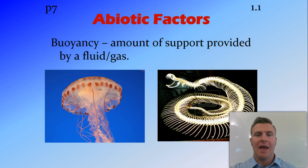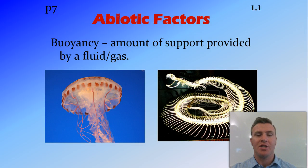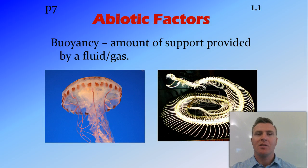Buoyancy is how much support is provided by the environment. In an aquatic environment, there's quite a bit of buoyancy and support — whether it's jellyfish staying up and together, or the gills of fish spreading out in the water. On land, air doesn't have the same buoyancy, so most animals need to support themselves, whether through an internal skeleton or an exoskeleton.